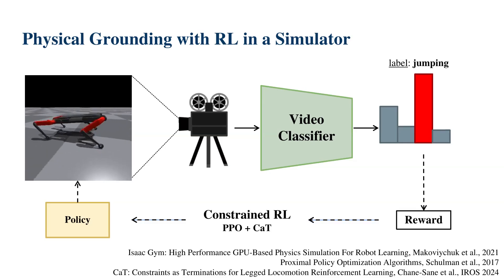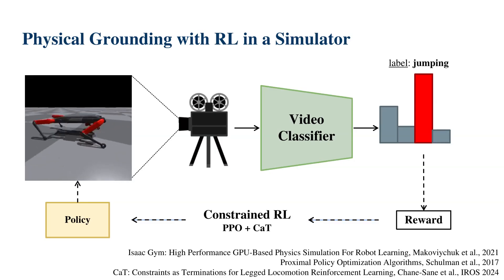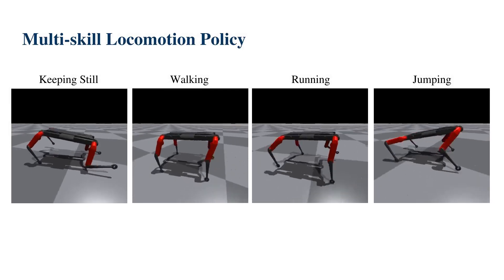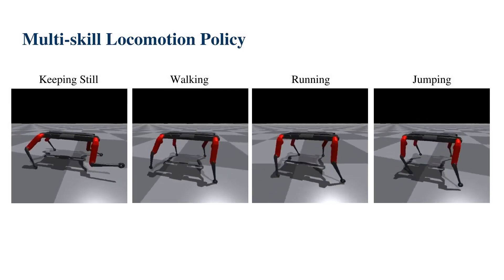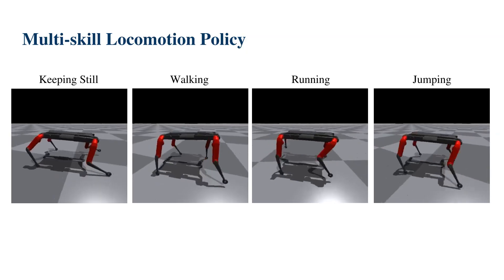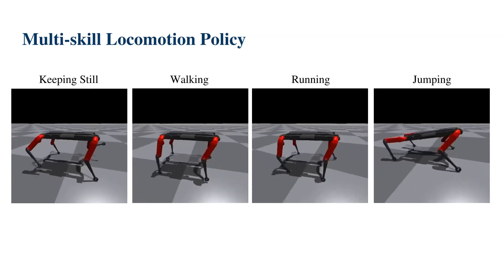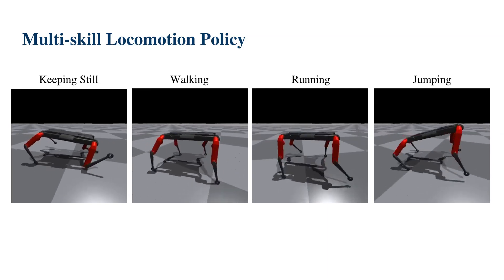Constraints applied across all skills ensure the emergence of safe and transferable locomotion skills. Remarkably, despite the vast embodiment gap, distinct locomotion skills emerge: keeping still, walking, running, and jumping. These skills arise from our video-based reward without reference trajectories or skill-specific rewards.